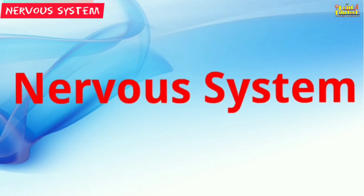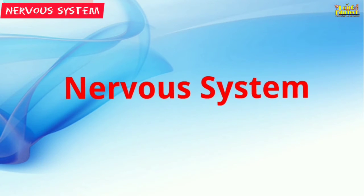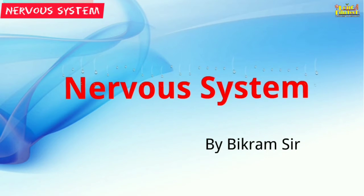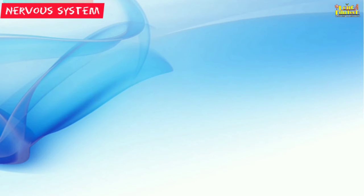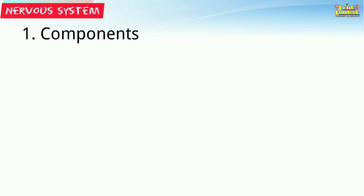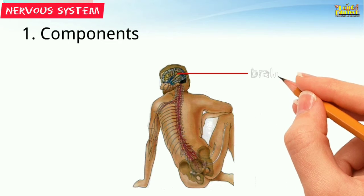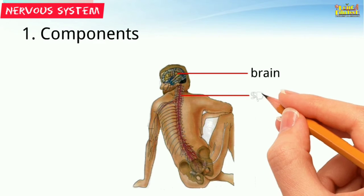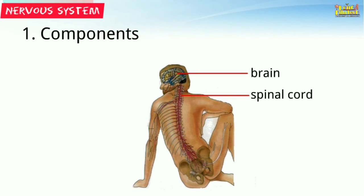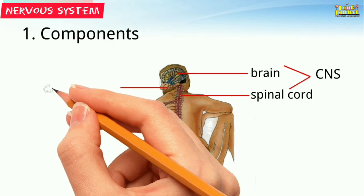Hello students, today we'll discuss the nervous system. A nerve cell or neuron is the basic unit of communication in our nervous system. It consists of main components: the brain and spinal cord, which together are called the central nervous system.